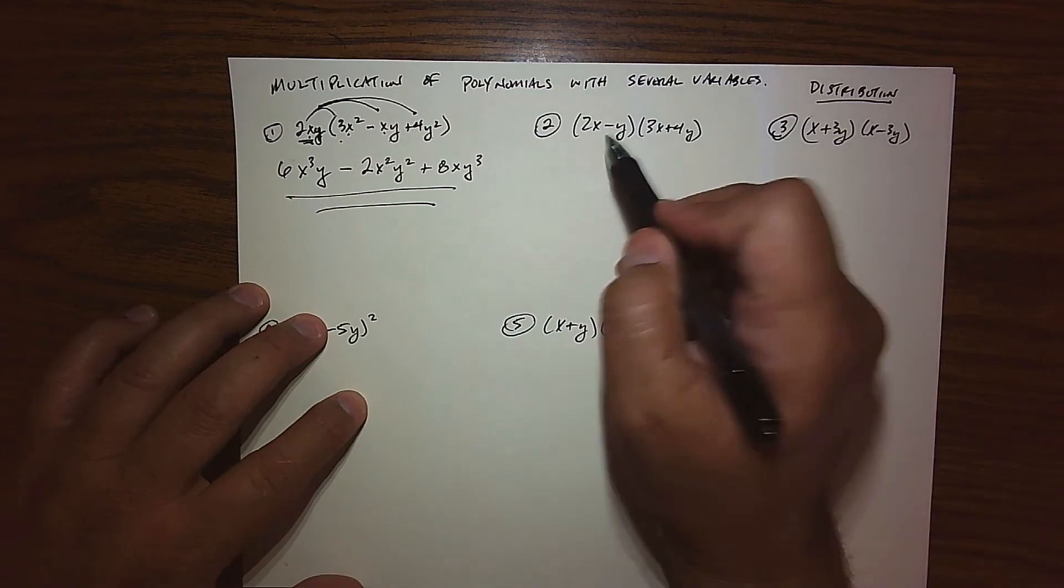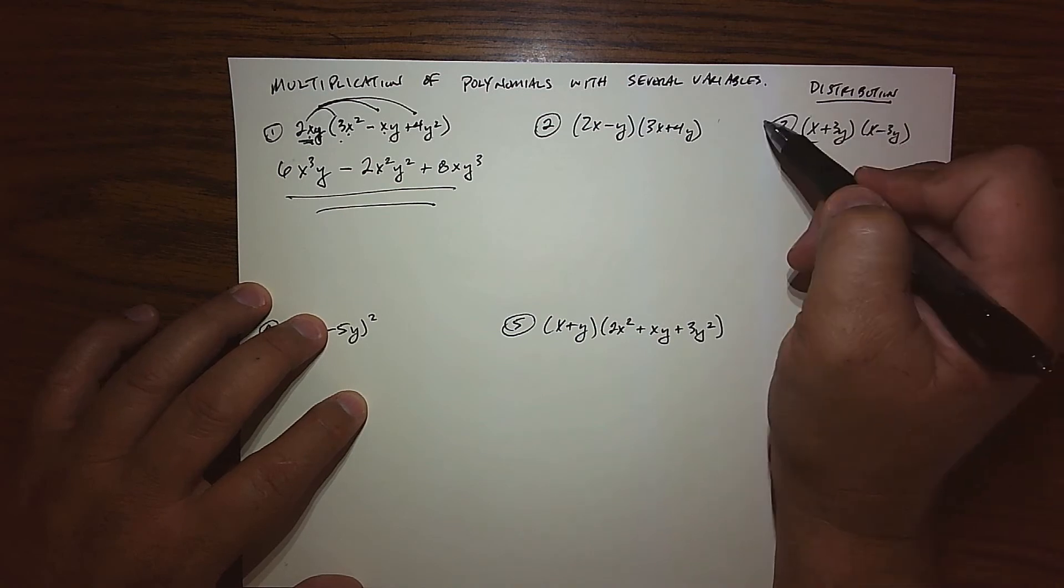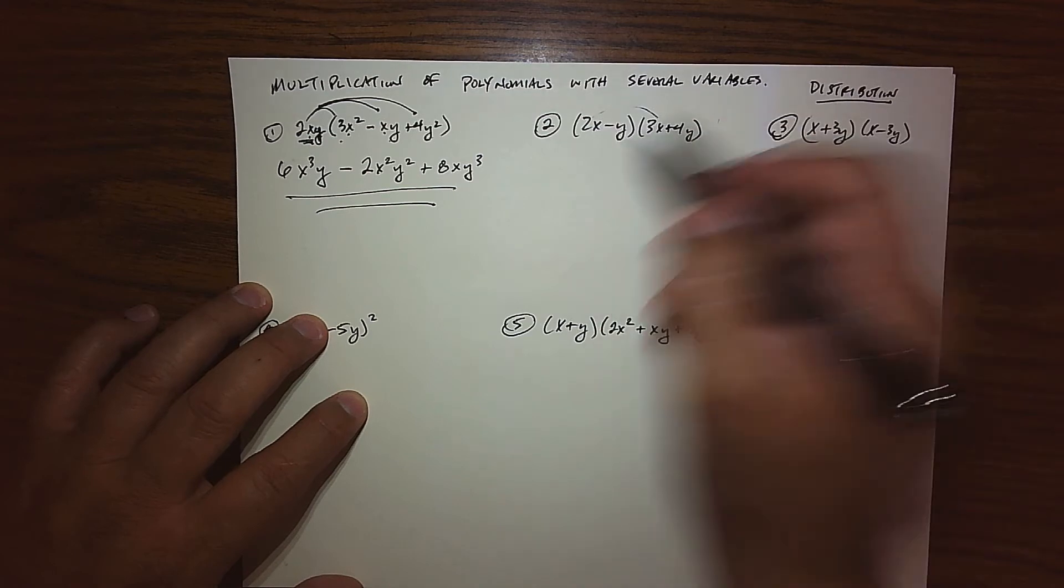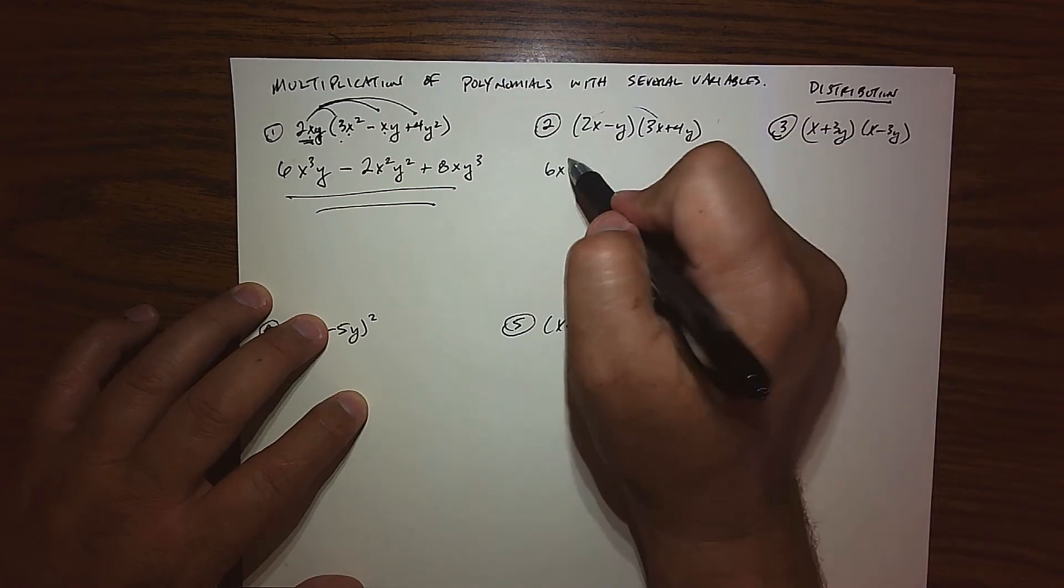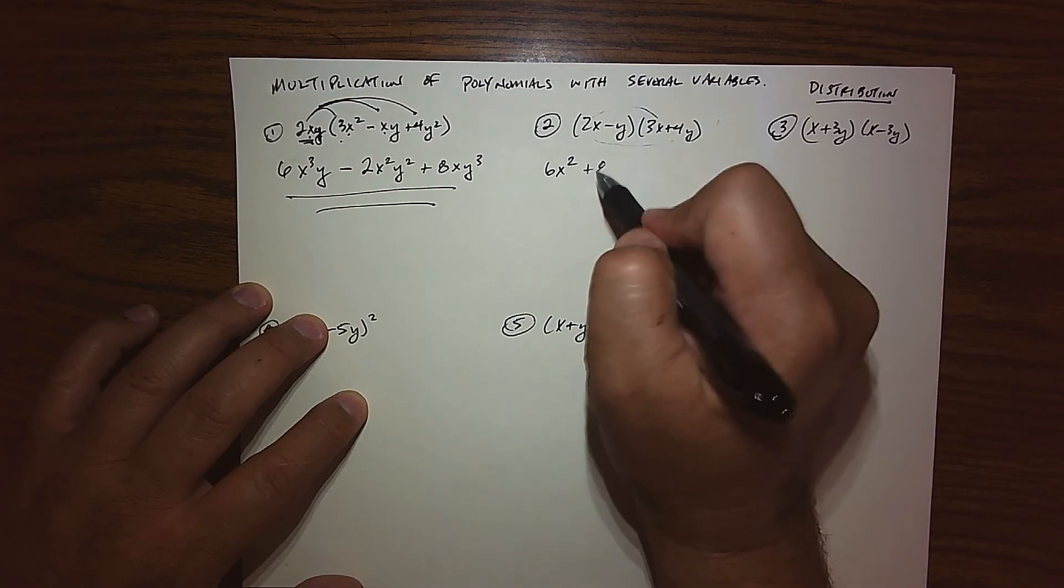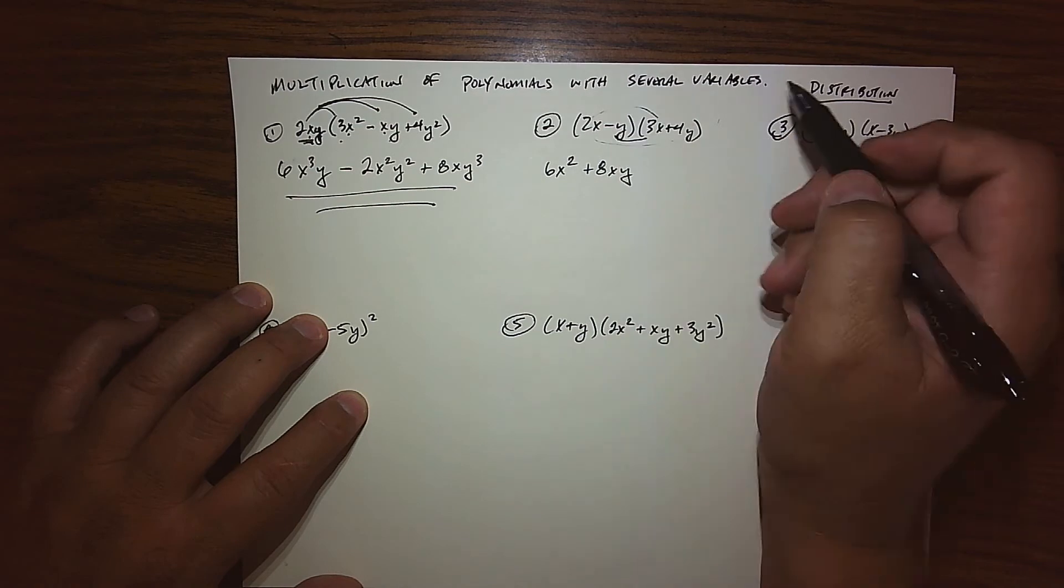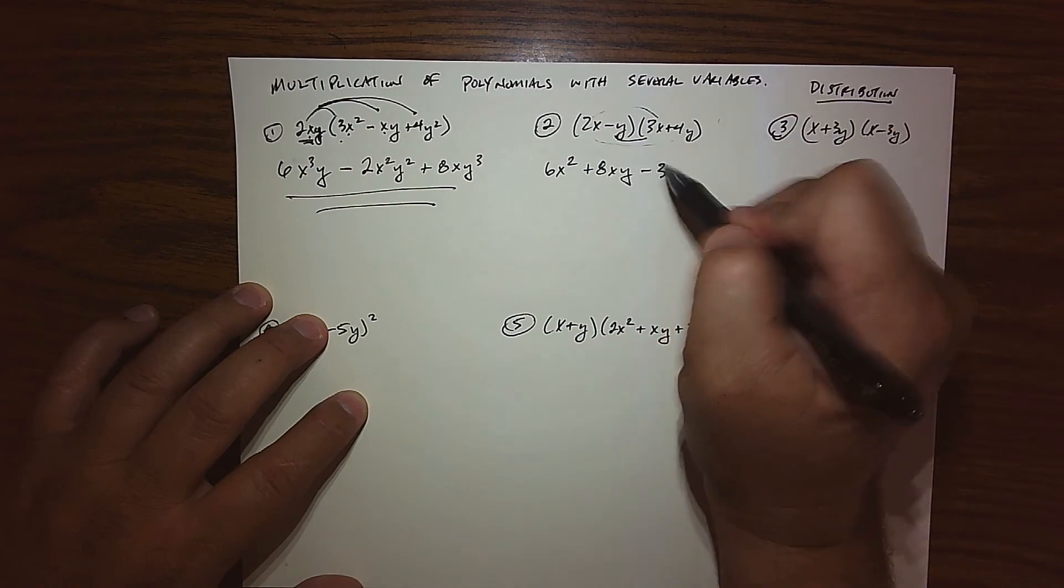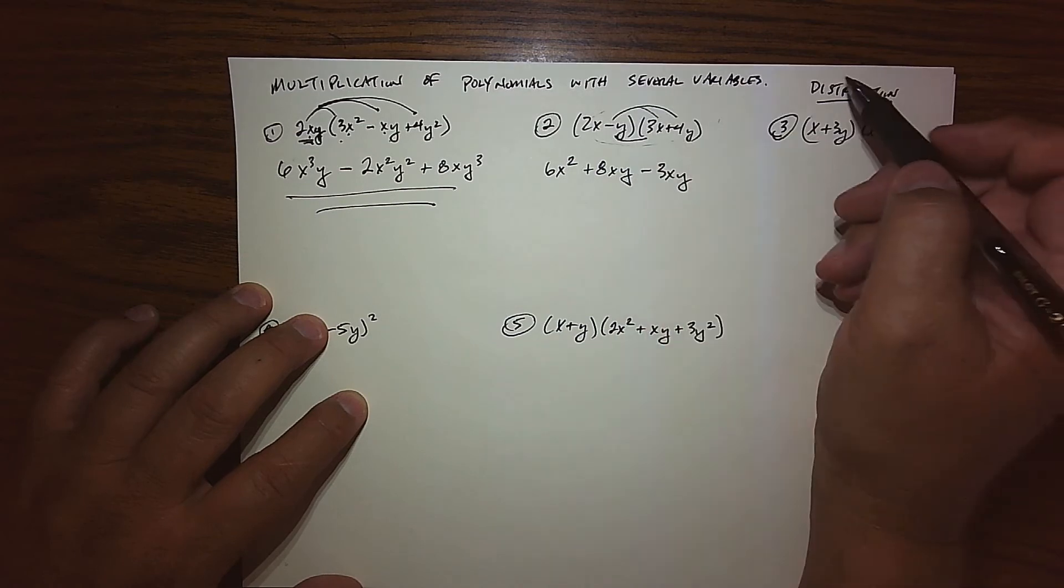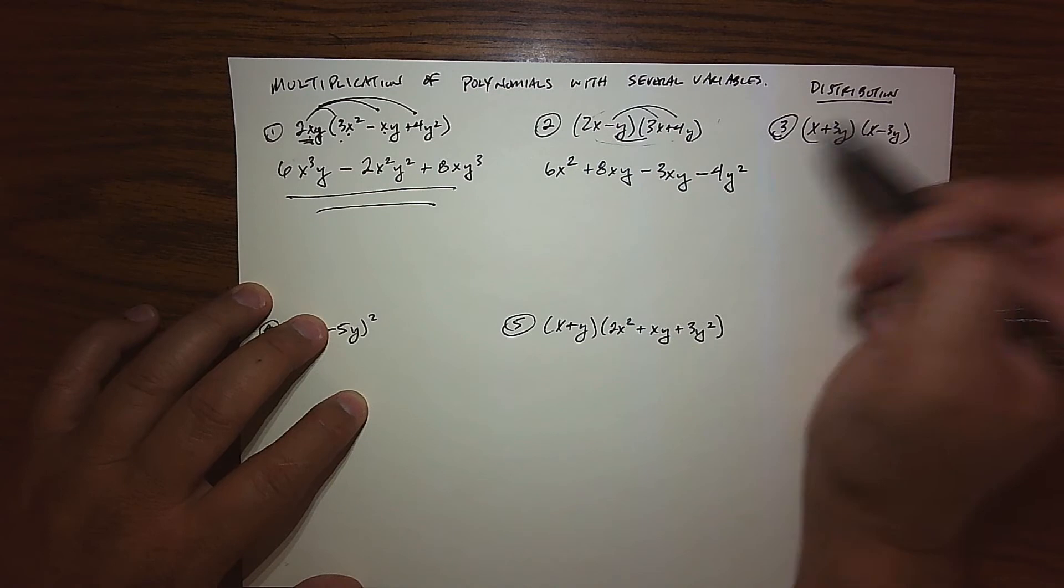Trying to get a little harder, we've got 2x minus y times 3x plus 4y. It's a binomial, so we're basically using our FOIL or our term by term. So when I do my first terms, I get a 6x squared. When I do my outer terms, I get a positive 8xy. When I do my inner terms, I get a negative 3, commutative property, xy. And then doing my last, a negative times a positive is a negative, and we get 4y squared.